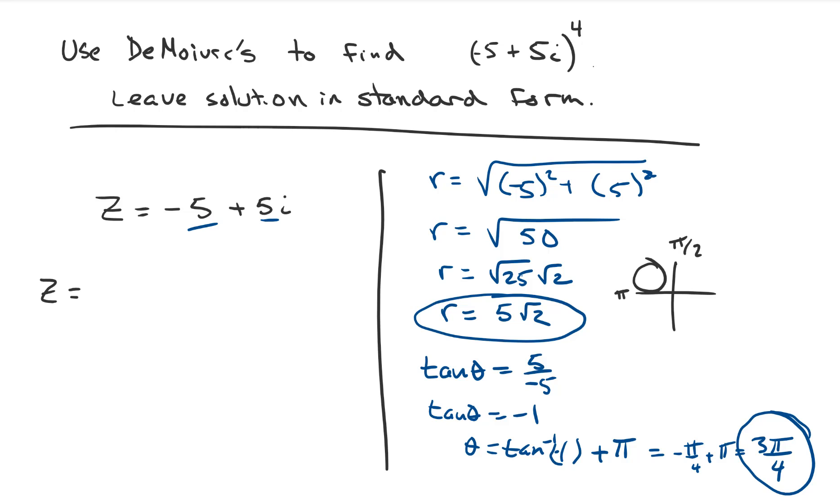Let's rewrite this and say that Z is equal to 5 root 2 times cosine of 3 pi over 4 plus i sine of 3 pi over 4.